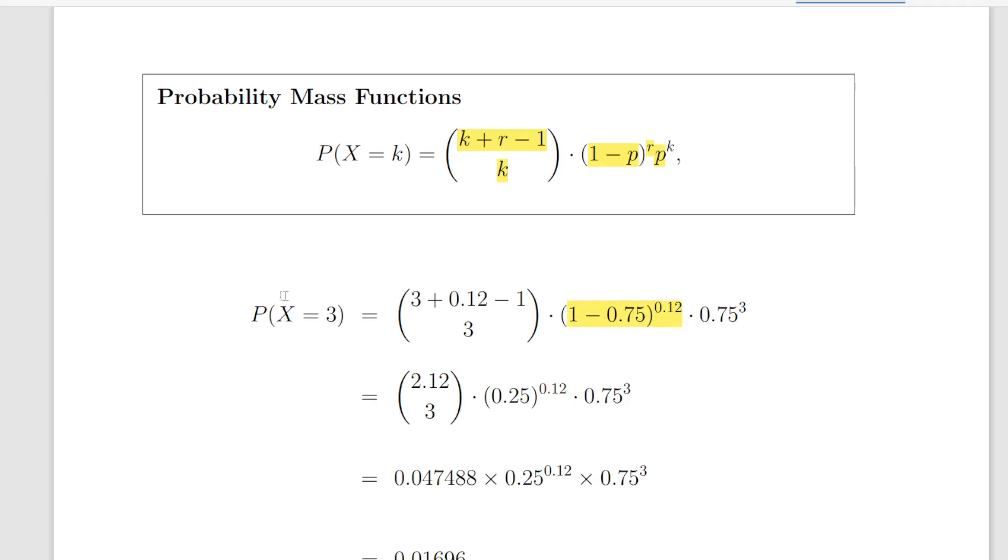Because we are asked to find the probability of X equal 3 here, that means that this is 0.75 cubed. Straightforward enough.